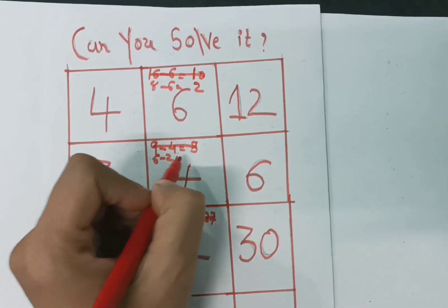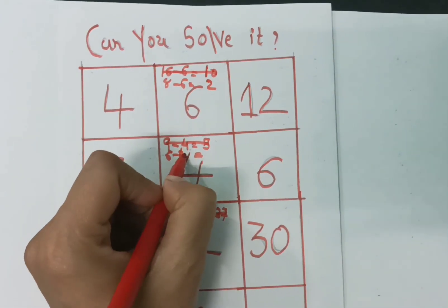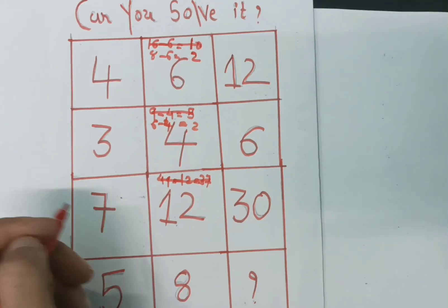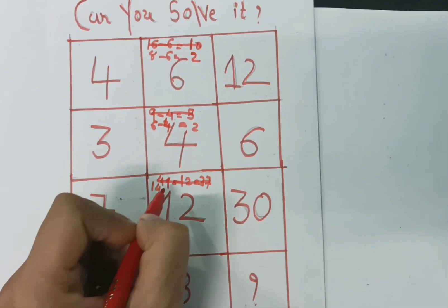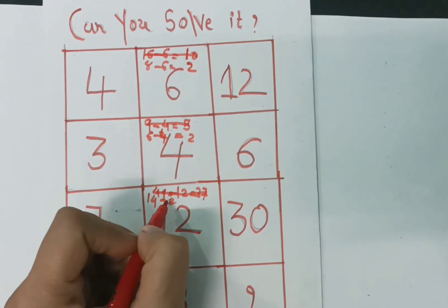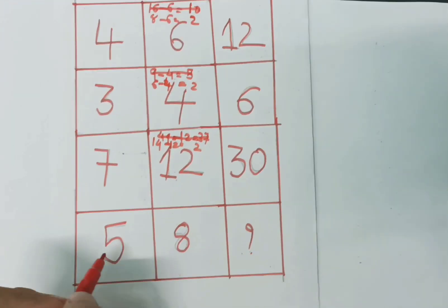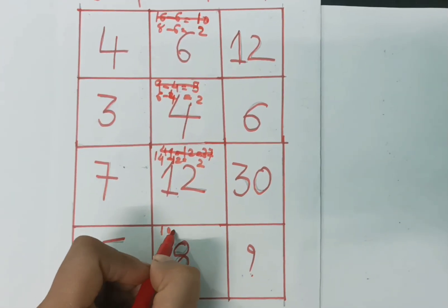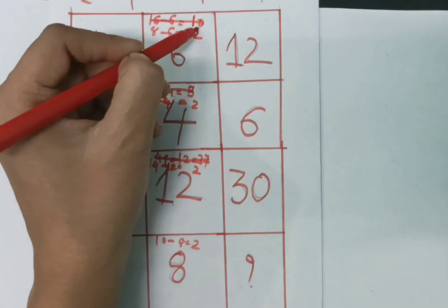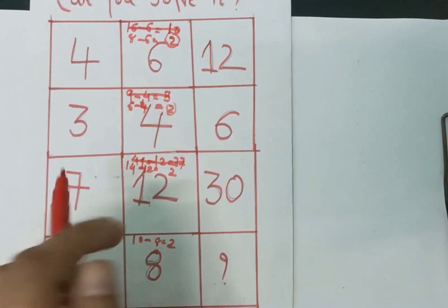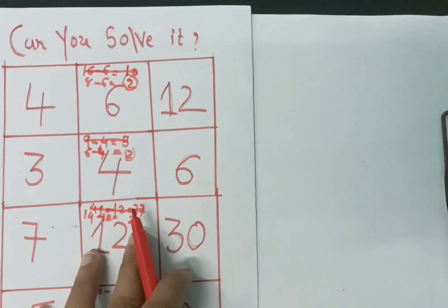Minus 4, so we get 2 here. 7 times 2 is 14, and minus 12, so we get 2. And here, 5 times 2 is 10, minus 8, so we get 2. So the difference is the same. This is the series. Now next,